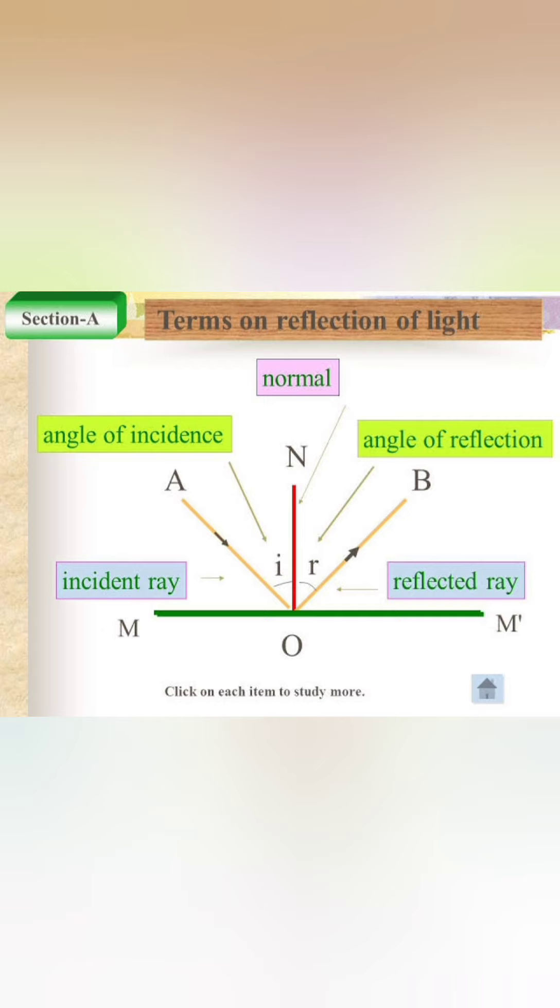The angle of reflection: The angle between the reflected ray and the normal is called the angle of reflection. It is represented by the small letter r.